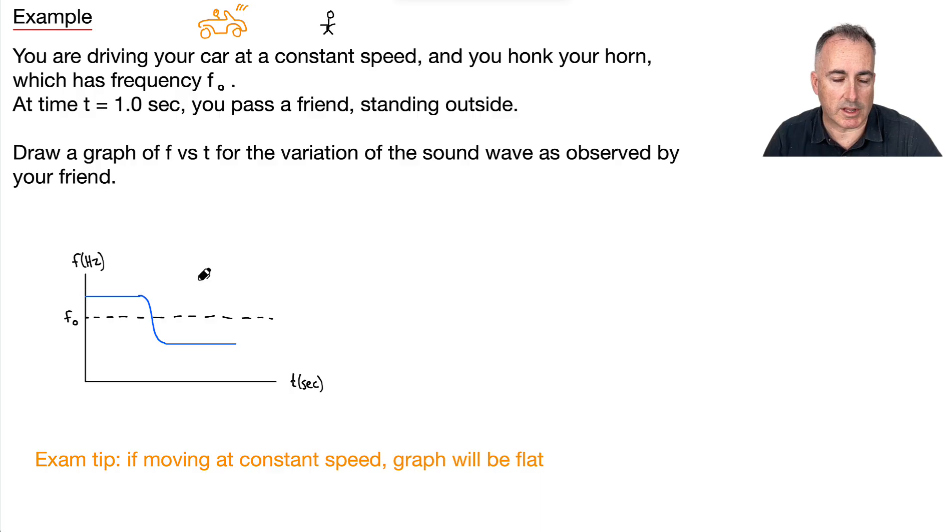And then it's going to go flat again. I'm just trying to draw straight lines here, something like this. And of course, this line right here, right in the center, this is going to be 1.0 seconds. So that's right when you pass your friend. So this is where it goes like this, and notice it's flat. That's the key thing: if you're moving at a constant speed, at least, then this graph will be flat.